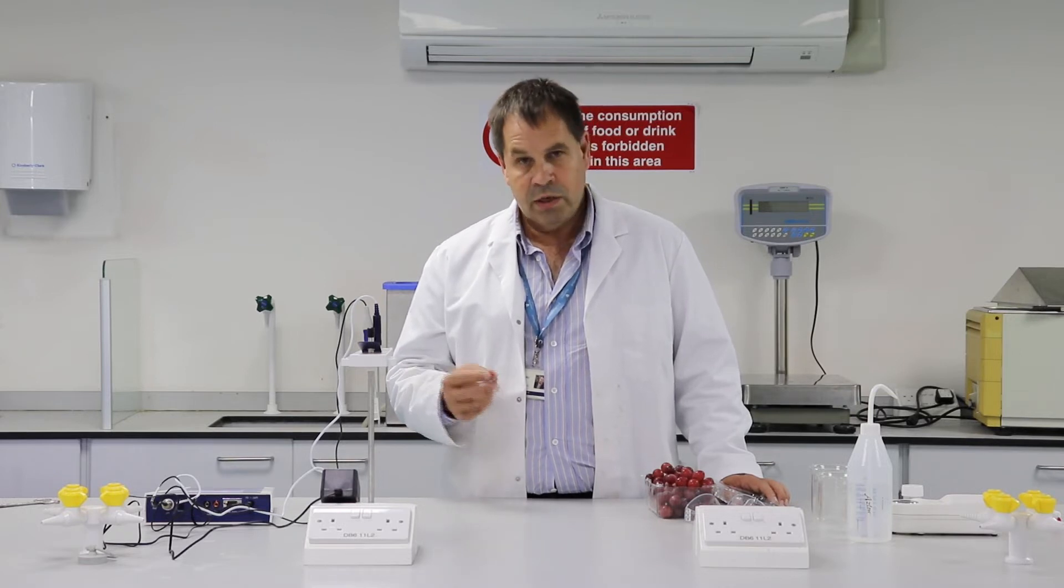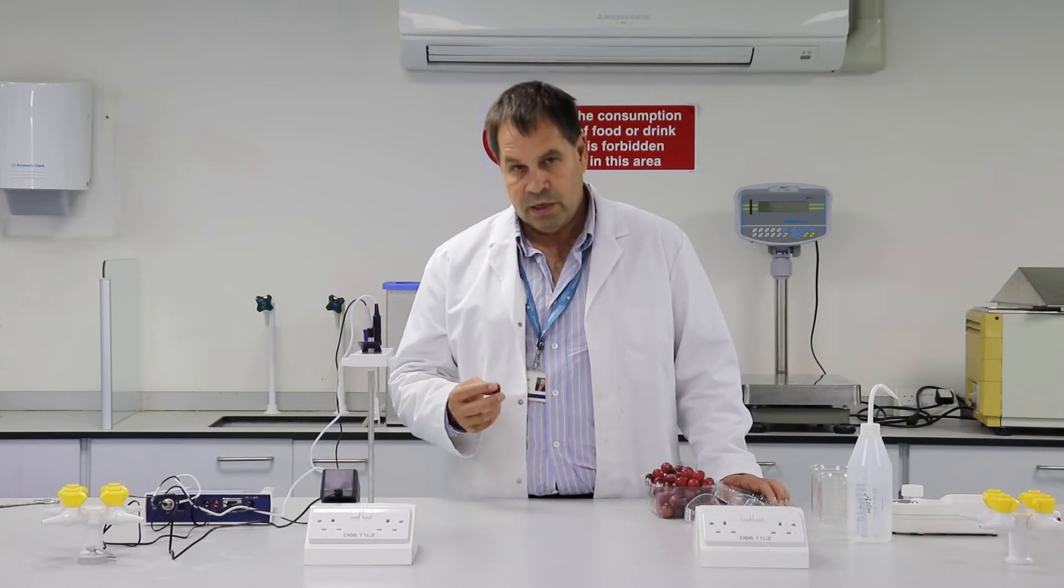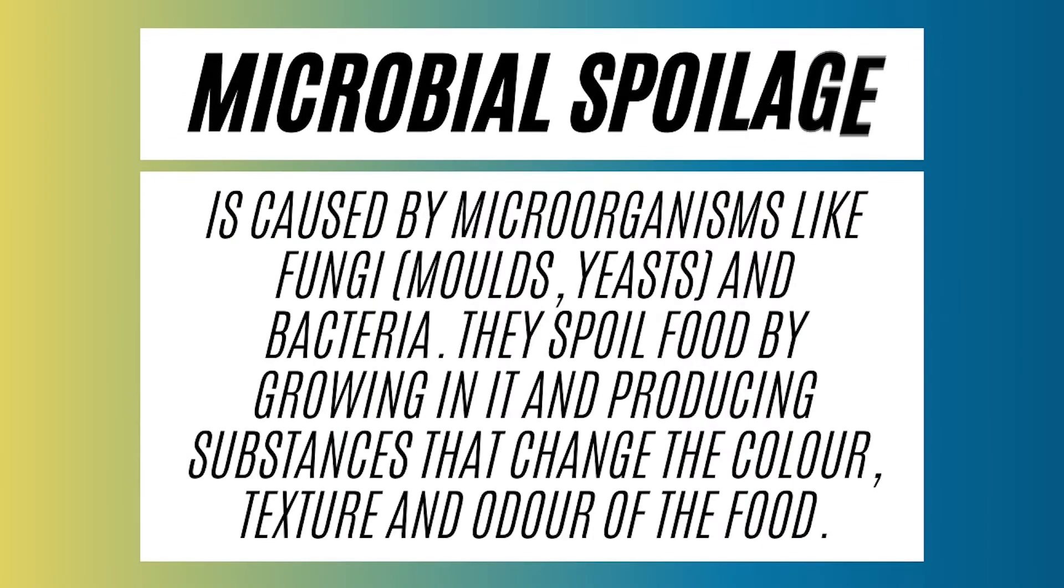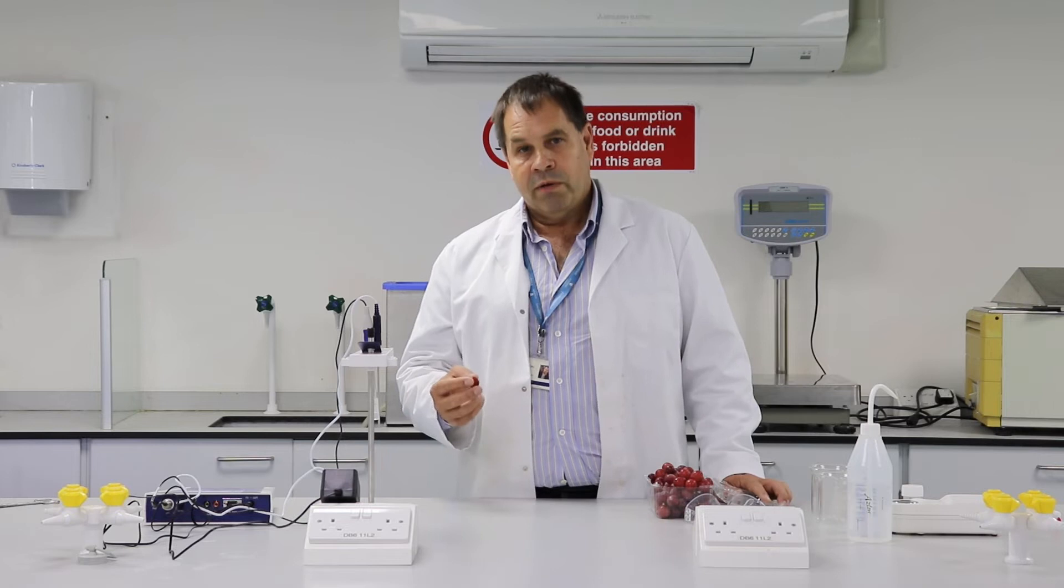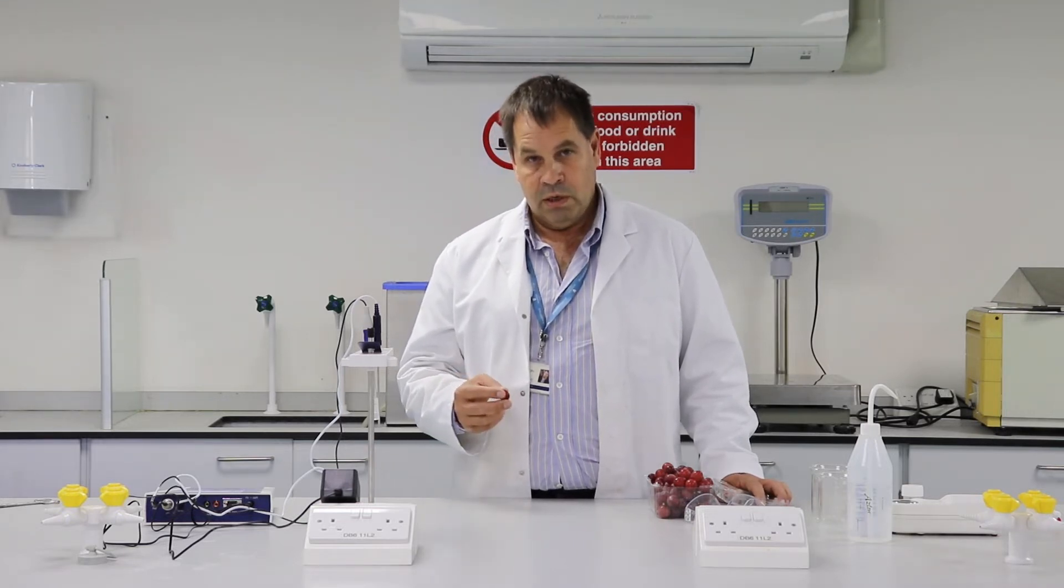So we need acid in grapes because it gives wine freshness but it also protects the wine from something called microbial spoilage. So if we don't have acid in the wine, it will oxidize, it will go brown, it will end up tasting awful. So when we make wine, we need to make sure that we measure our grapes and we have the right level of acid and we have the right level of sugar in the grape.